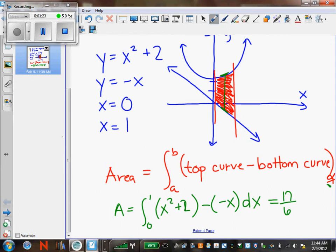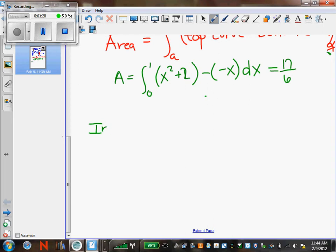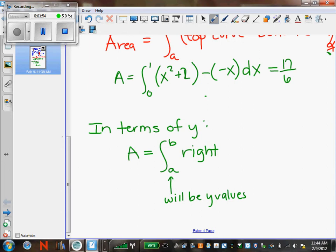If the functions happen to be in terms of y, then that means your area is still the same. Your a and your b values will be y's. And then you want to look at the rightmost curve minus the leftmost curve. And that'll be dy.